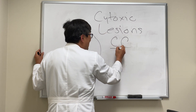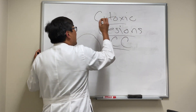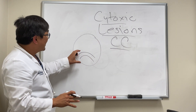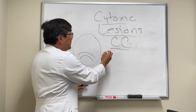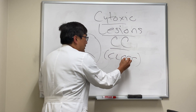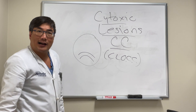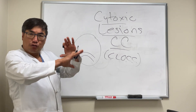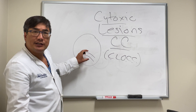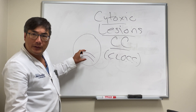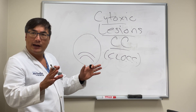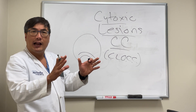When you have a cytotoxic lesion in the corpus callosum, that has a differential diagnosis, and it's called a CLOCK — Cytotoxic Lesion Of the Corpus callosum. The CLOCK lesion has a broad differential diagnosis: toxic metabolic conditions, ischemia including reversible ischemia, metabolic derangements like diabetic ketoacidosis, and infectious etiologies.